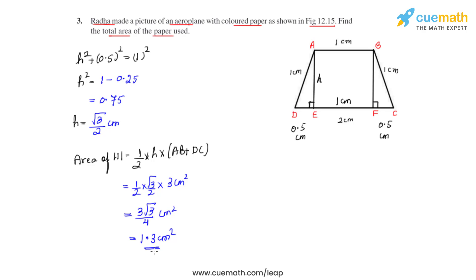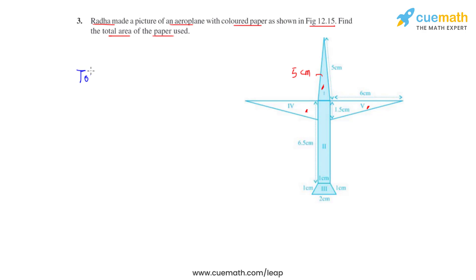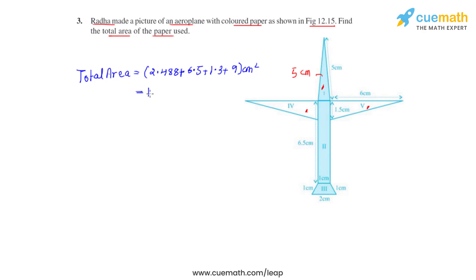Now that we have found all the individual areas, we add them to get the total area of the aeroplane: Region 1 (2.488) + Region 2 (6.5) + Region 3 (1.3) + Regions 4 and 5 (9) = 19.3 centimeter square. So the total area of the paper used is 19.3 centimeter square.